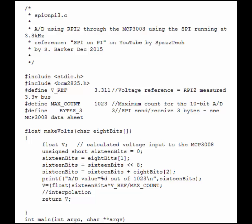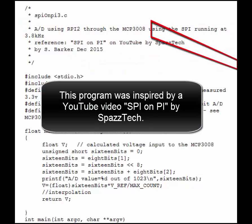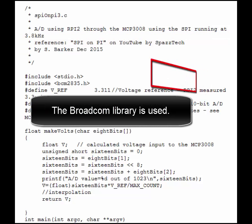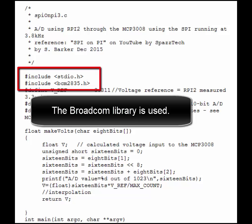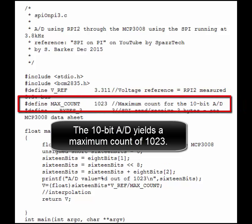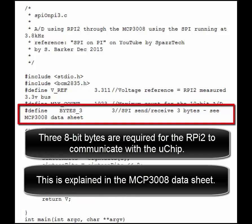Now the C program will be explained. The clock is running as slow as possible. This program was inspired by a YouTube video, Spy on Pi by SpazTech, and the Broadcom library is used. The voltage reference was measured at 3.311 volts. The 10-bit A2D yields a maximum count of 1023. Three 8-bit bytes are required for the Raspberry Pi to communicate with the microchip, as explained in the microchip data sheet.